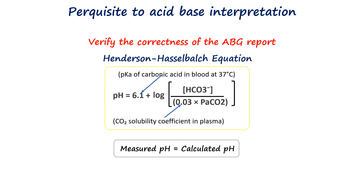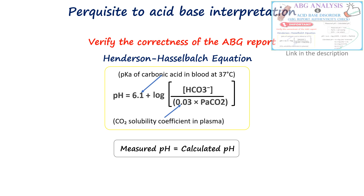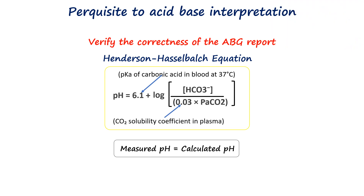Before moving on to the actual approach to ABG analysis, let's recap what we learned in the previous video. We have seen why it was important to check the authenticity of the ABG report. For that, we used the Henderson-Hasselbalch equation to check whether the pH measured by the ABG analyzer matches with the calculated pH derived through the Henderson-Hasselbalch equation using bicarbonate and carbon dioxide. Please check this video.